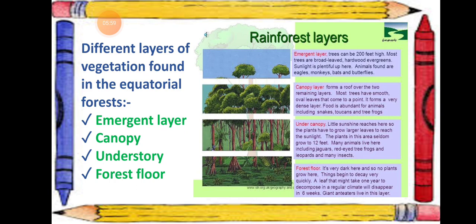Equatorial forests are very dense and are divided into four layers. The first is the emergent layer, which contains the tallest trees of the forest — these trees can be 200 feet high. Most trees are broad-leafed, hardwood, and evergreen. Sunlight is plentiful up in this layer, and the animals found here include eagles, monkeys, bats, and butterflies.